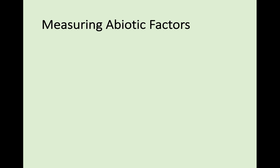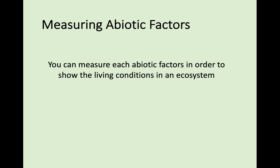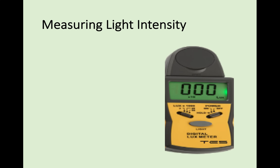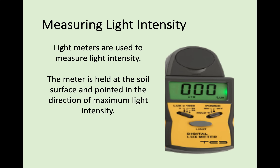You also need to know how to measure these abiotic factors — what can go wrong and how you can avoid any mistakes. To measure light intensity, you use a light meter. You hold it at soil surface, point it in the direction of sunlight, and it gives you a reading of light intensity. That's a simple measurement.